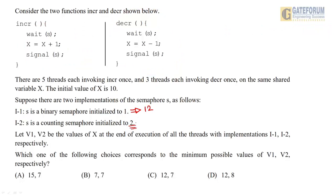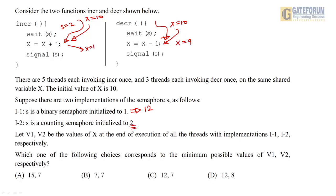For implementation I2 with counting semaphore initialized to 2: two threads can enter the critical section simultaneously. For example, one increment and one decrement thread can both be inside at the same time, both reading x as 10. This allows interleaving — an increment gives x=11 and a decrement gives x=9 concurrently. We need to find the minimum possible value.